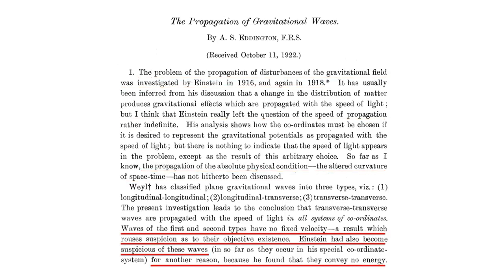After referencing the three types of waves Einstein had found, he continued, waves of the first and second types have no fixed velocity, a result which rouses suspicion as to their objective existence. And he noted that Einstein had also become suspicious of these waves for another reason, because he found that they convey no energy.